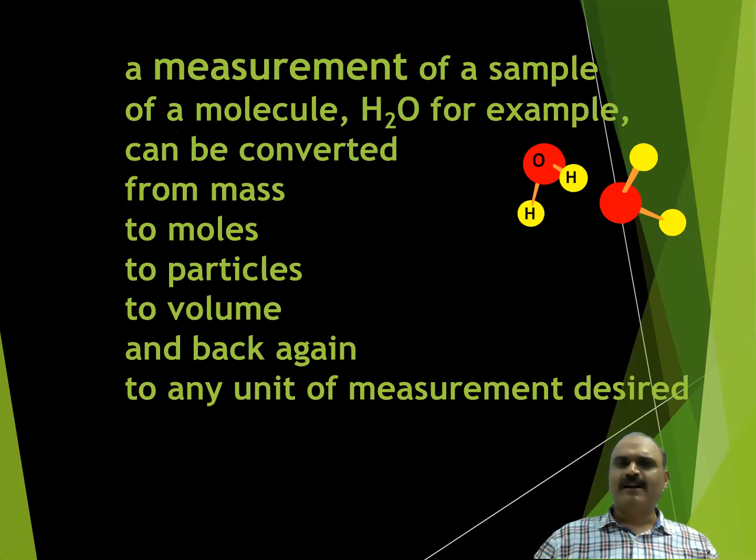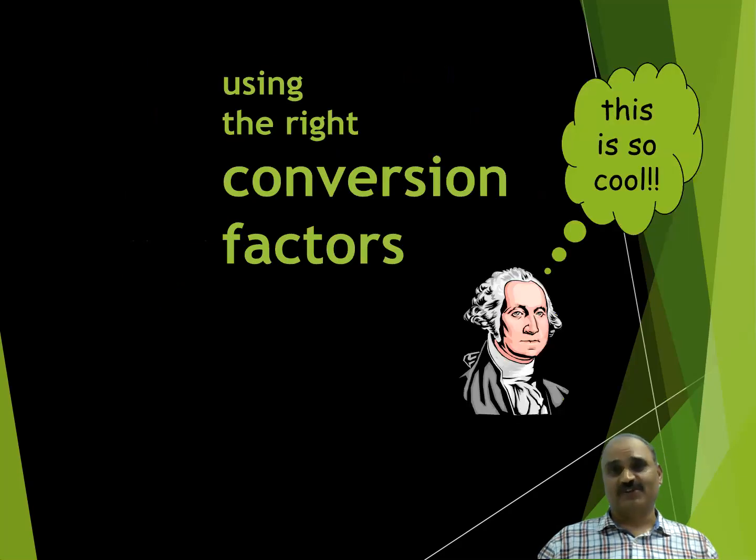For example, a measurement of sample of molecules of water H2O can be converted from mass to moles to particles to volume and similarly again back. Back means from volume to mass, from particle to mass and from moles to mass. For example, I have a drop of water. The mass of that drop of water is suppose 0.5 milligram. Just assume. And if we have to calculate that how much molecules of water it contains or how much volume will it occupy at normal temperature and pressure, then that can be done only by using mole calculations, mole conversions.